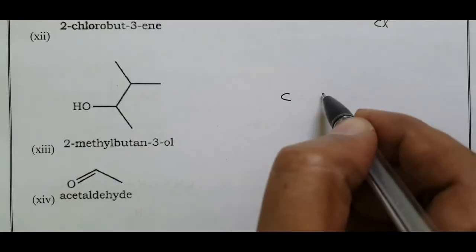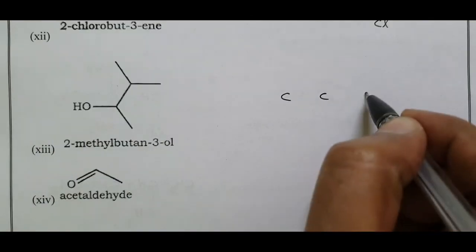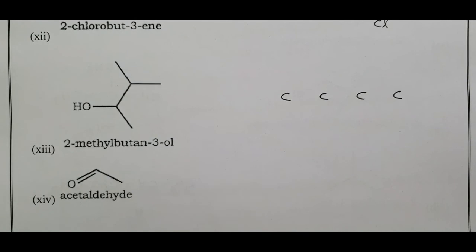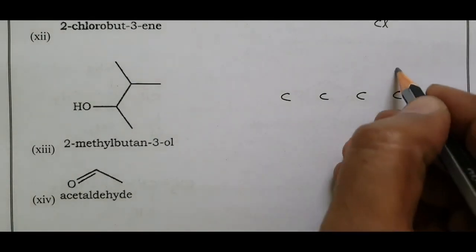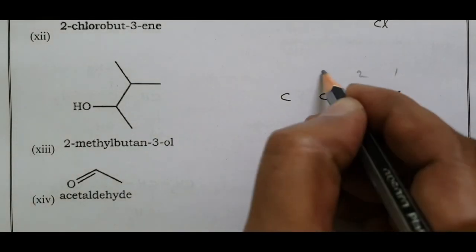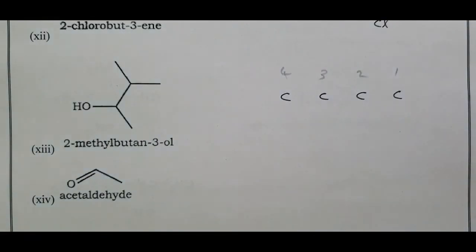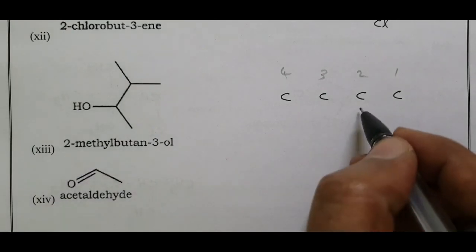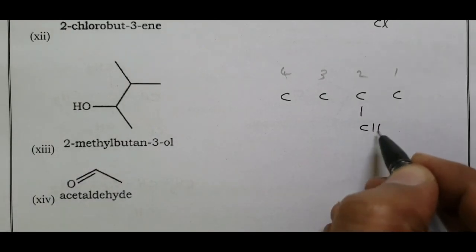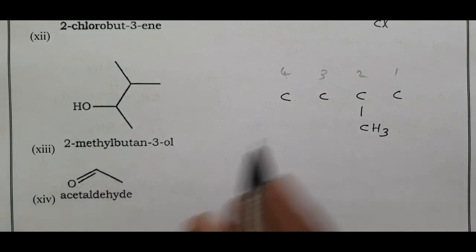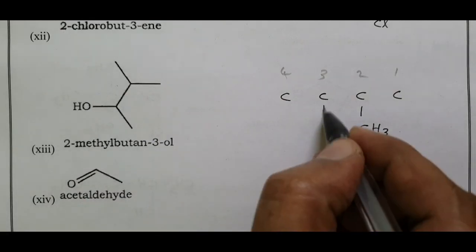2-methylbutan-3-ol — four carbons numbered 1, 2, 3, 4. The second carbon has one methyl group. The hydroxyl group is at the third carbon position.